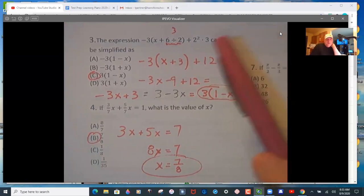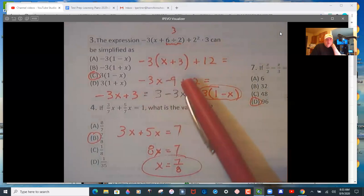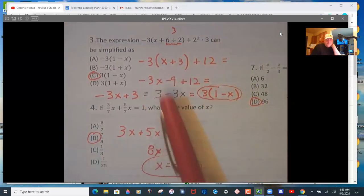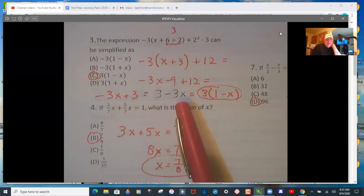So simplify first. This is 12, 4 times 3. Multiply your negative 3 in. Simplify that expression. And you get negative 3x plus 3, which is 3 minus 3x. Factor out a 3 and you get 3 times 1 minus x.